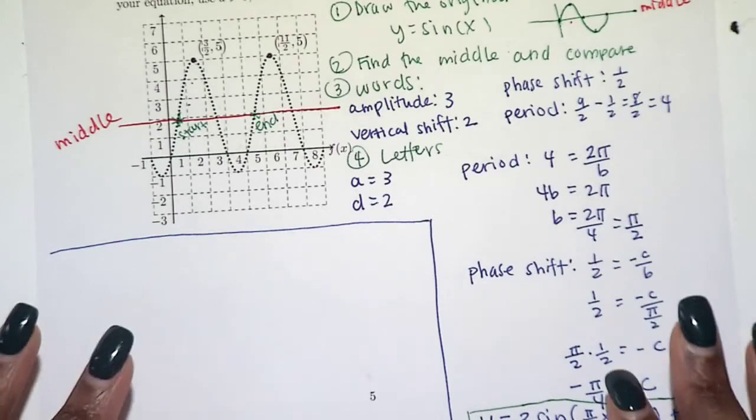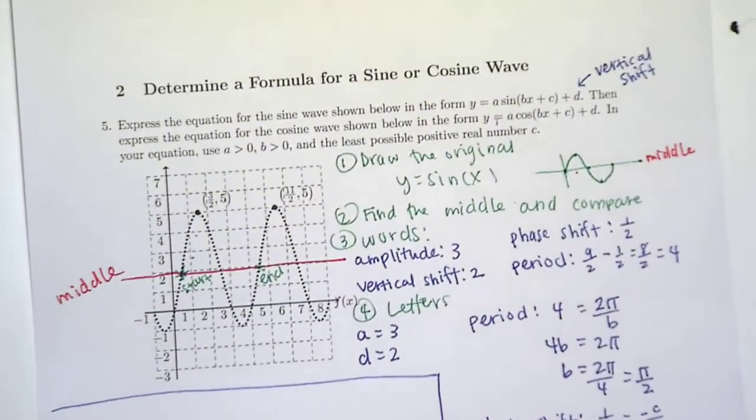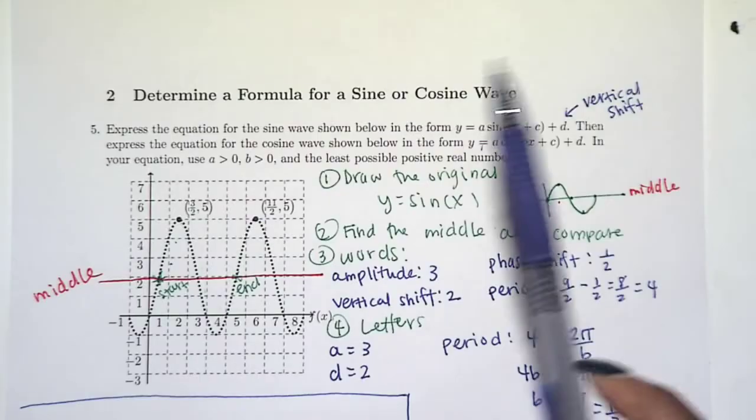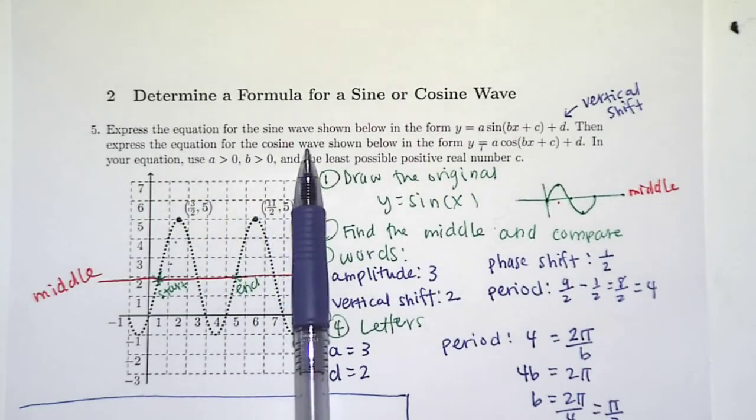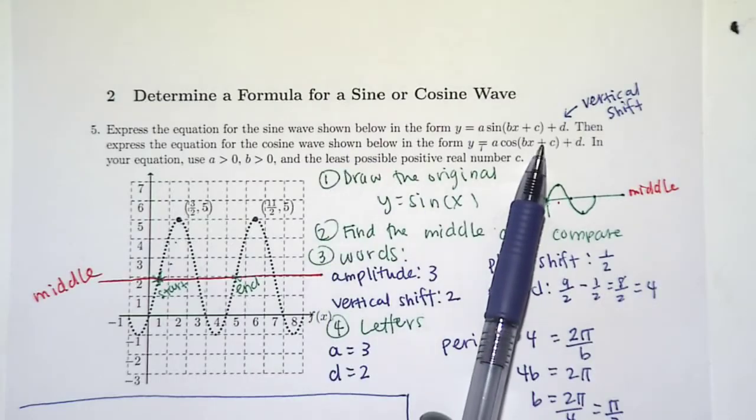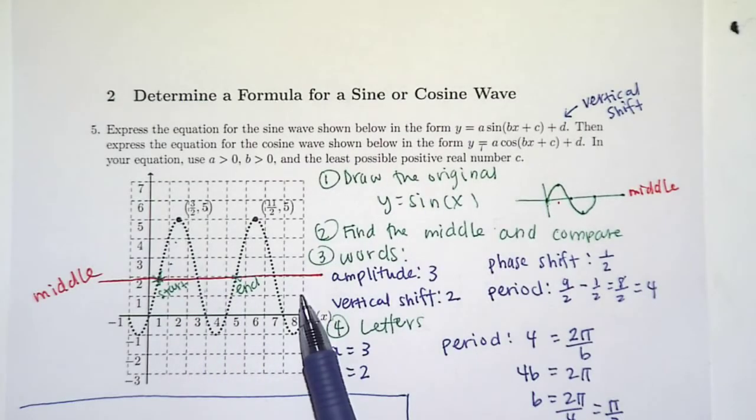All right, so now let's answer the next part of the question. The next part says express the equation for the cosine wave. Remember I mentioned sine and cosine are exactly the same. They are just horizontal shifts from each other.